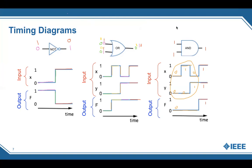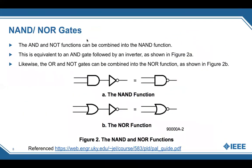That's how a timing diagram works — it just tracks the inputs. Now we're going to get into the NAND and NOR gates. The fancy thing about NAND and NOR is all you do is add a NOT gate at the end. For the NAND, it's a NOT gate added to an AND gate. For the NOR gate, it's an OR gate with a NOT gate. The only difference is they have a bubble at the end, and that bubble represents the NOT gate.